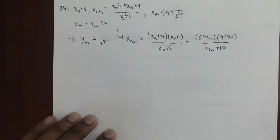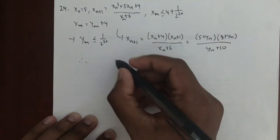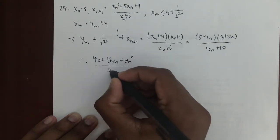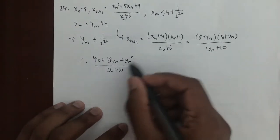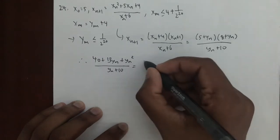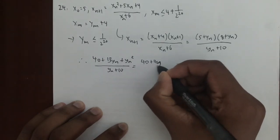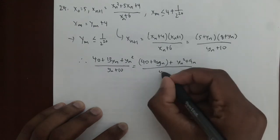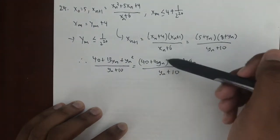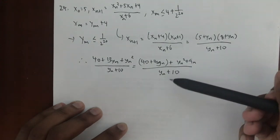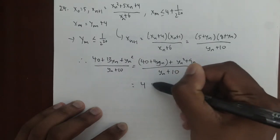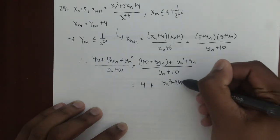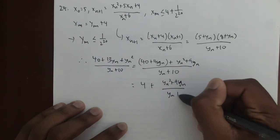Now from here, it seems like we don't really know how to proceed, but we'll just keep expanding and hopefully something nice happens. So thus we have (40 + 13y_n + y_n^2)/(y_n + 10). Now here, what we can do is rewrite the top to make this nice factoring happen. We can rewrite the top as (40 + 4y_n + y_n^2 + 9y_n) all divided by y_n + 10.